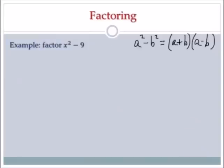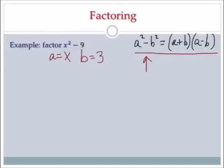Hi, it's me, Mr. B. Let's factor x squared minus 9 using difference of two squares. I put the formula up here at the top of the screen. We're given a squared minus b squared in the form of x squared minus 9. We need to figure out what a and b are. a is what I square to get x squared, which is x. b is what I square to get 9, which is 3. Now I apply the formula: (a plus b)(a minus b), so x plus 3, x minus 3.